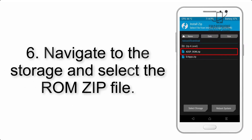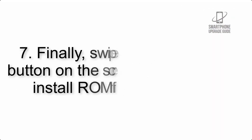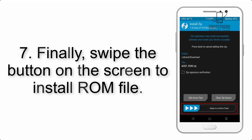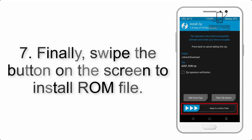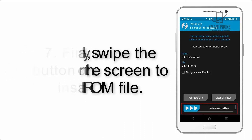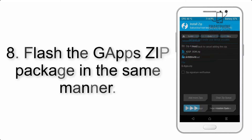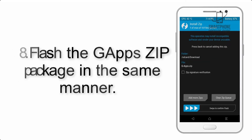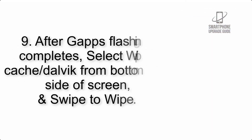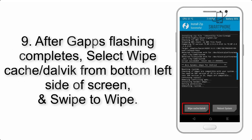Step 5: Go back to the recovery main screen and tap on the Install button. Step 6: Navigate to the storage and select the ROM zip file. Step 7: Swipe the button on the screen to install the ROM file.